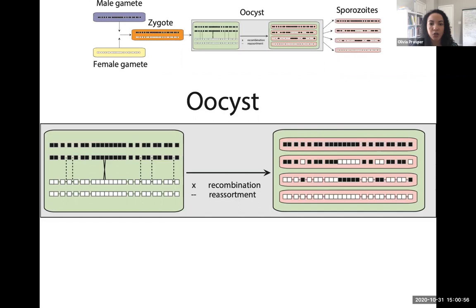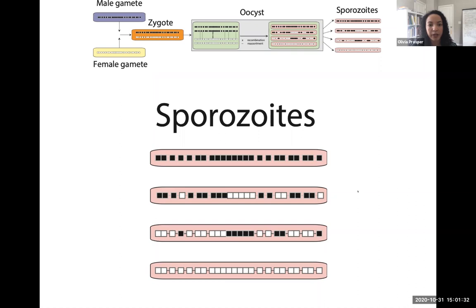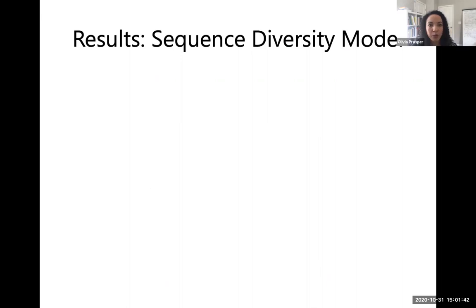This example results in four different parasite sequences, two of which may match the parents. Additional recombination events can produce sequences different from both parents, meaning up to four unique sequences can arise. At the sporozoite stage, we can obtain up to four unique sequences, all potentially different from the starting populations ingested by the mosquito.